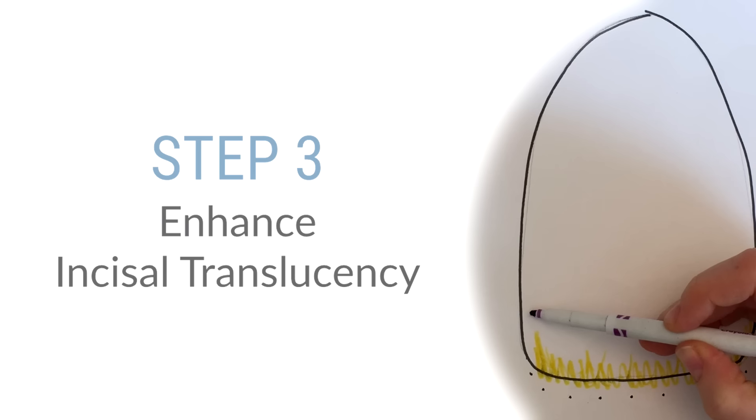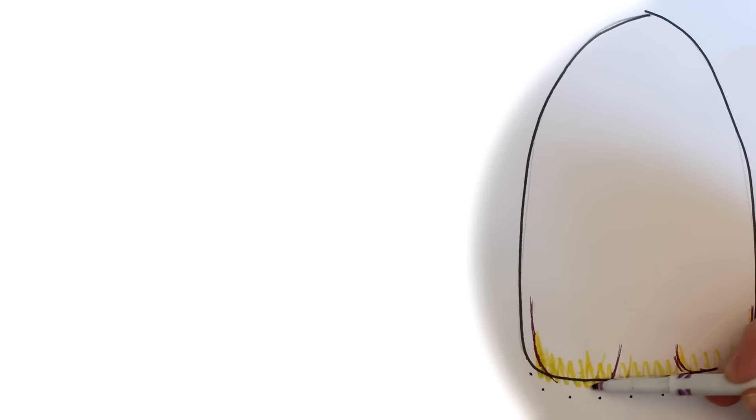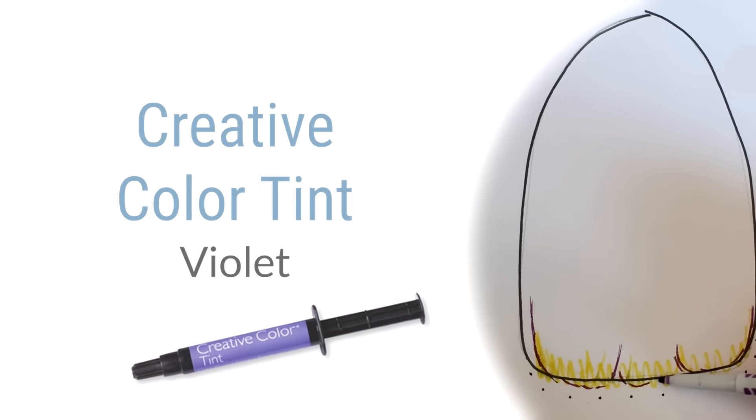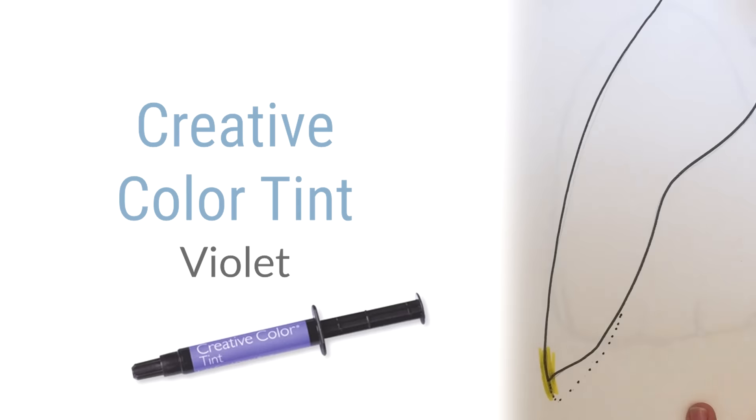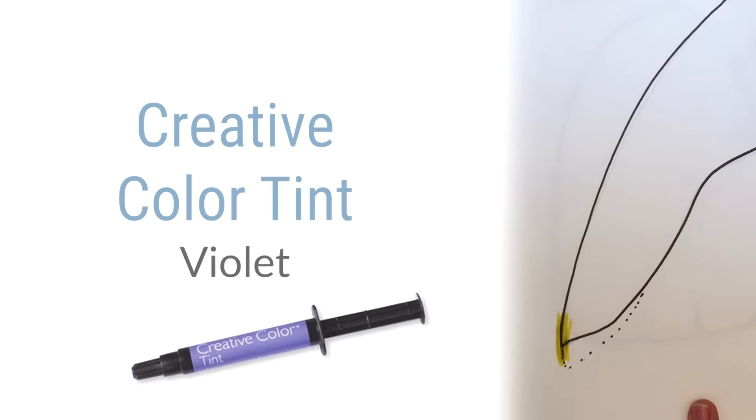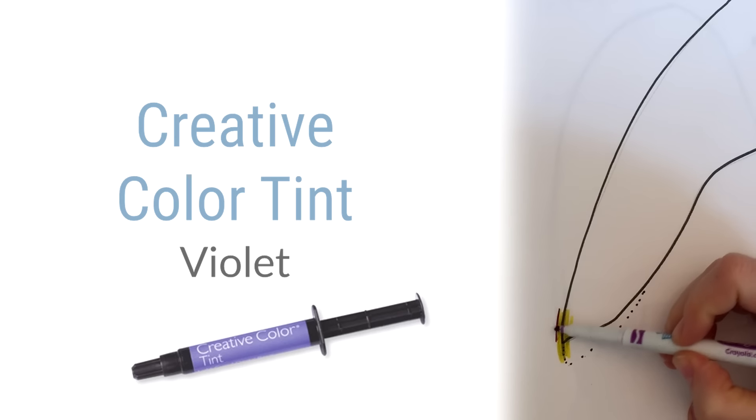Third here, I wanted to make sure that we would create some incisal translucency and help separate the lobes a little bit. So we're going to mimic with violet tint, so creative color, violet tint on the side here. A little bit of the lobing, very lightly. You want to make sure that you almost do not see it in reality for this to look super natural and you mustn't go too high either.